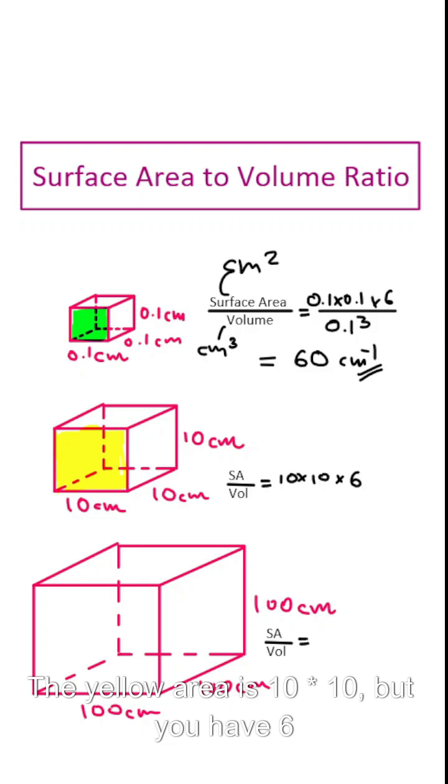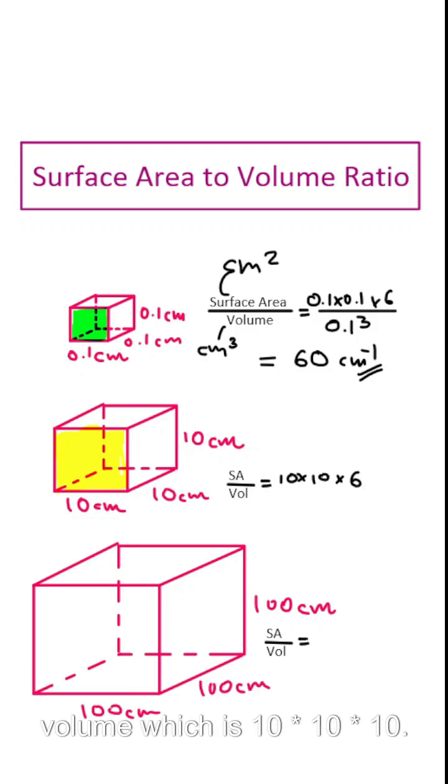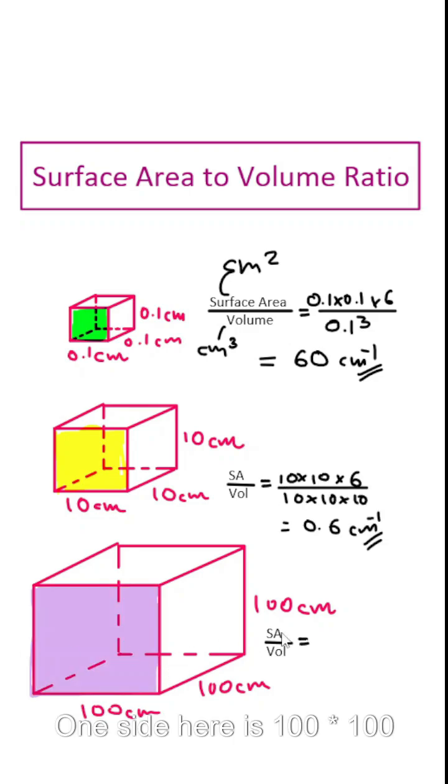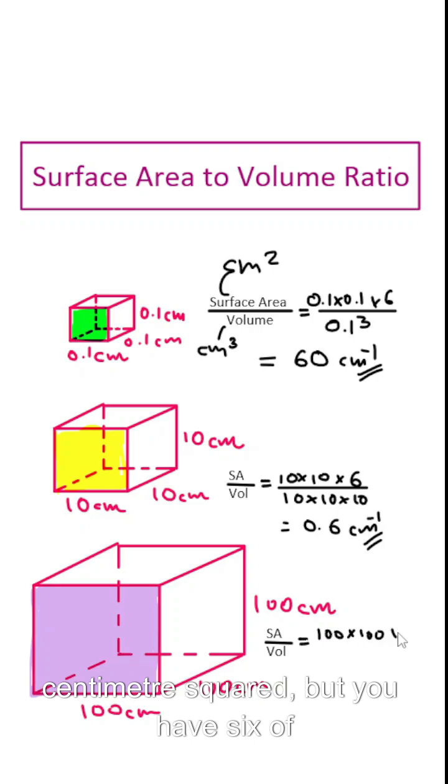The yellow area is 10 times 10, but we have six surfaces multiplied by six. Divide it by the volume which is 10 times 10 times 10. One side here is 100 times 100 centimeter squared, you have six of those, so multiplied by six, divided by volume which is 100 cubed.